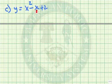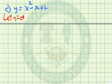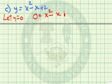y equals x squared minus x plus 2. Let's let y equal 0. So we have 0 equals x squared minus x plus 2. Let's use the quadratic formula here, a, b, and c.